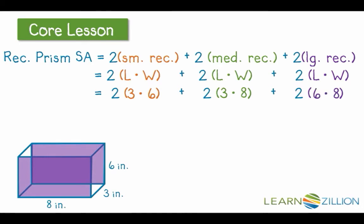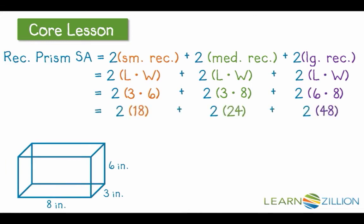That was really the hardest part right there. Moving forward, it's just a matter of doing some careful computation. Do not forget to double the area of each face, because we have 2 of every sized face. So we take 2 times 18, 2 times 24, and 2 times 48. That will get us the area of all 6 faces.